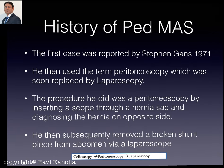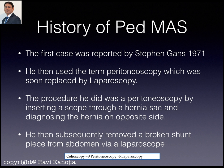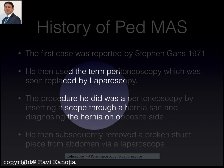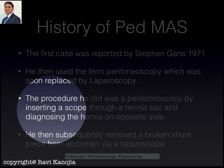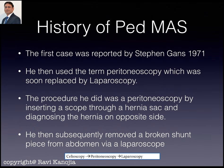A brief note on the history of pediatric minimally access surgery: the first case was reported by Stephen Gans, who did a peritoneoscopy by inserting a scope through a hernia sac and diagnosed a hernia on the opposite side. He subsequently removed a broken shunt piece from the abdomen via the laparoscope. Initially people termed it cilioscopy, then peritoneoscopy, and finally the word laparoscopy came into use.